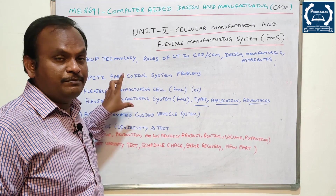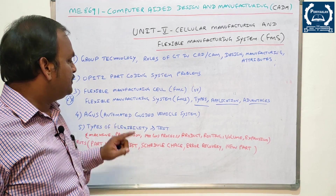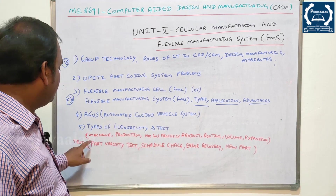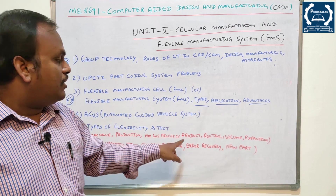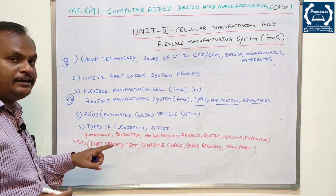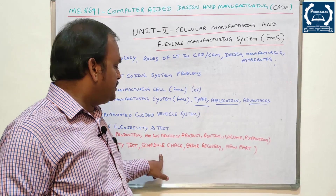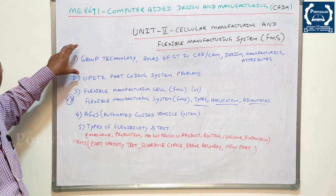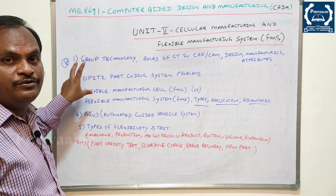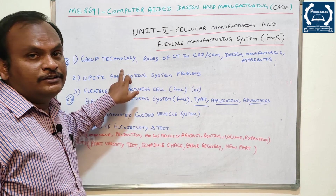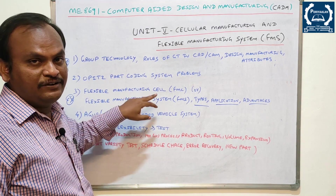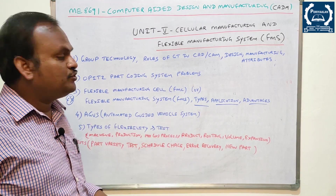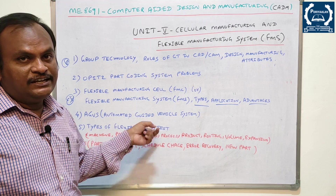The fifth topic is AGVS — Automated Guided Vehicle System — an important question. Also, types of flexibility and tests: machine, production, mix or process, product, routing, volume, and expansion are the flexibility types. The tests are: part variety test, schedule change, error recovery, and new part. For two-mark questions: define GT, define FMS, define FMC, types of flexibility, and flexibility tests are all important.